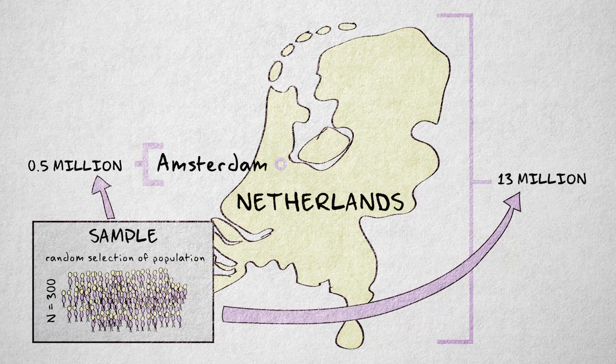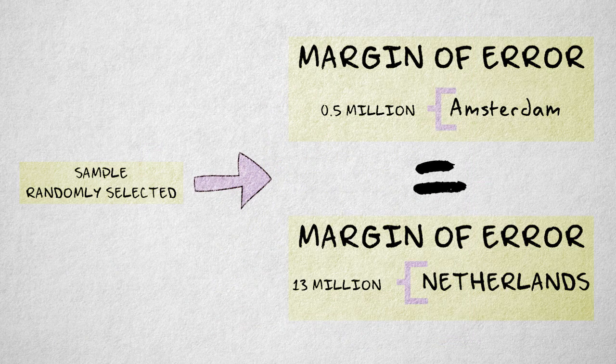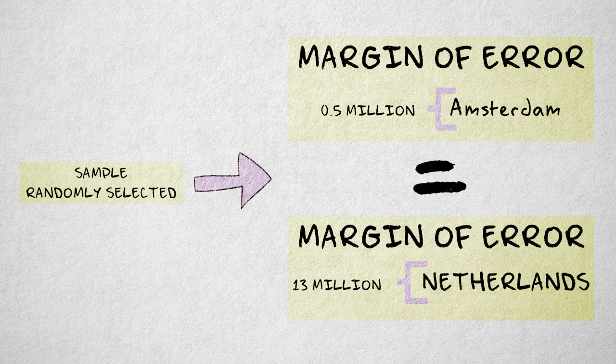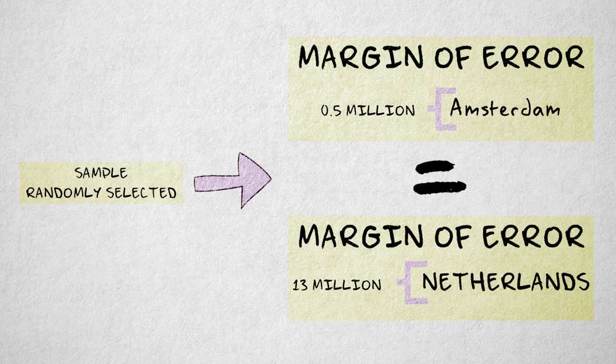As long as the samples are both randomly selected, the margin of error will be the same, all other things being equal. This seems very counterintuitive, but it's true nonetheless.